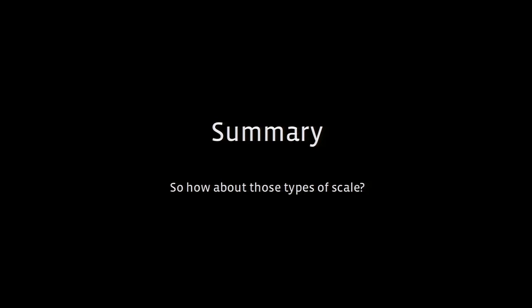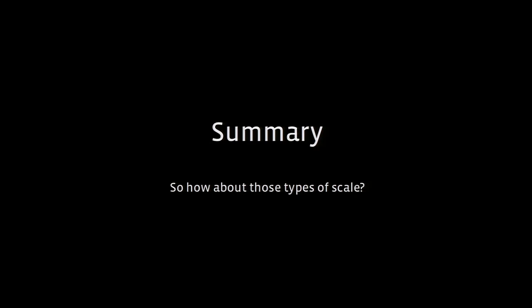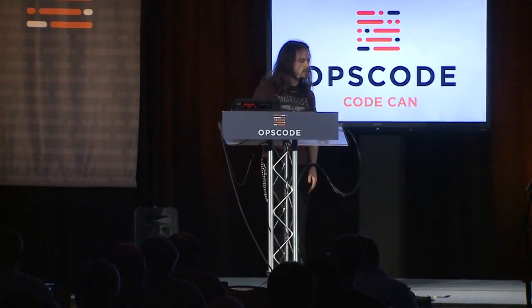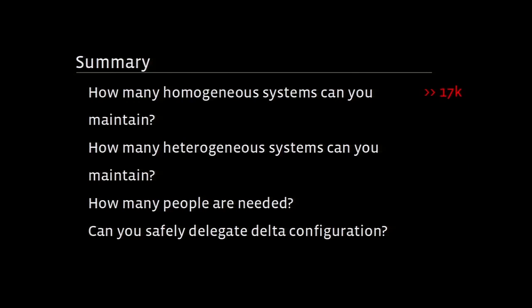We talked about types of scale at the beginning, then I talked about the infrastructure we built and why it applies to varying different-sized environments. Let's see how this measures up. For homogenous systems — I ran 17,000 heterogeneous nodes converging every 15 minutes, and homogenous systems are computationally easier. Since I had lots of CPU idle left, I could run way more than 17,000 homogenous nodes. I also know I can run more than 17,000 heterogeneous systems because I did it at 80% CPU idle.